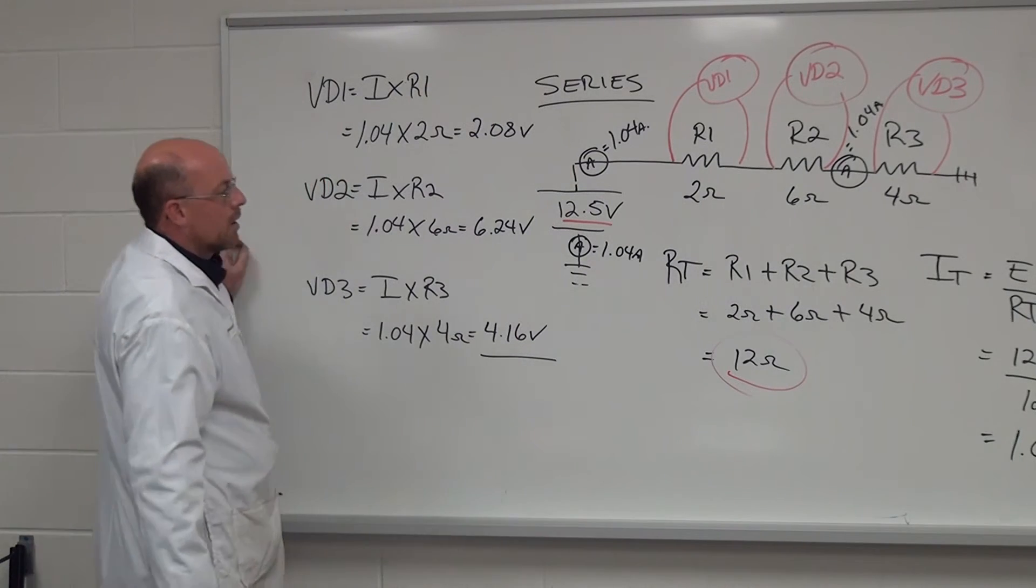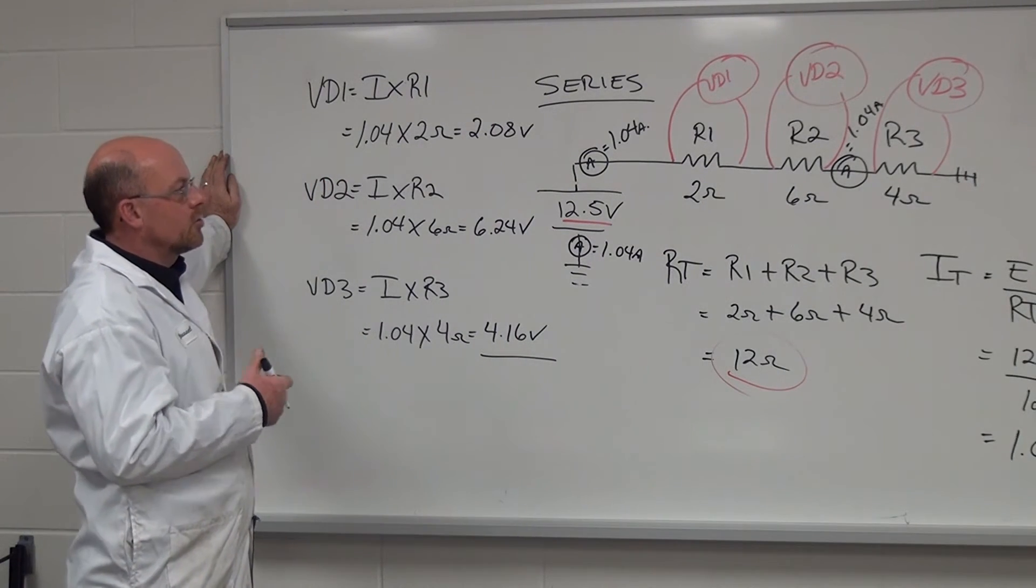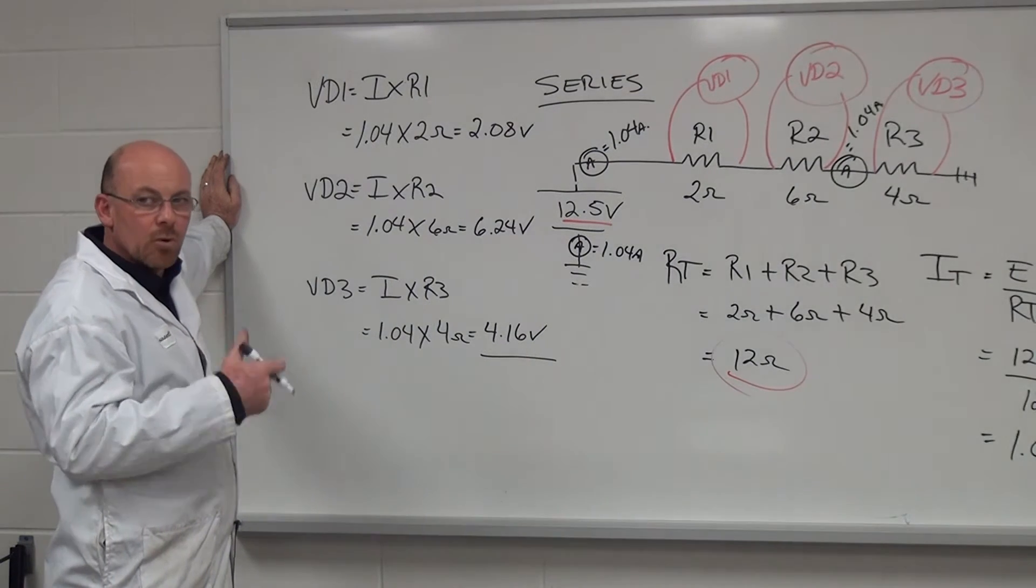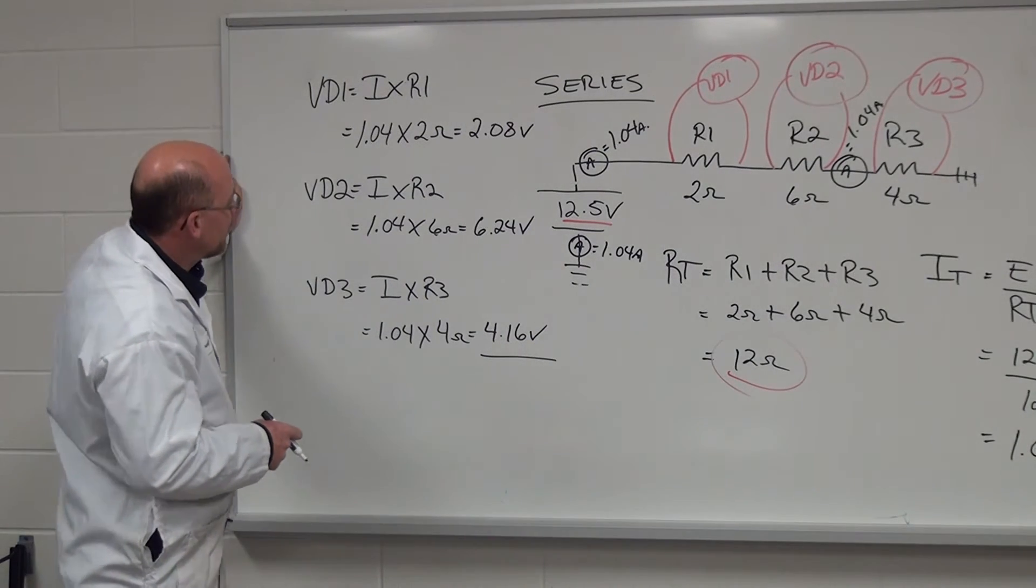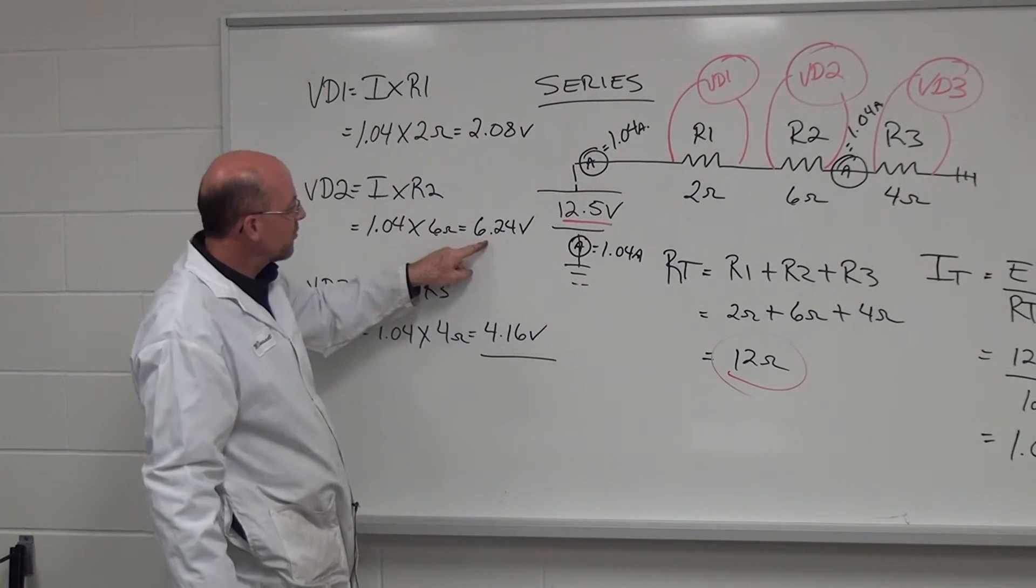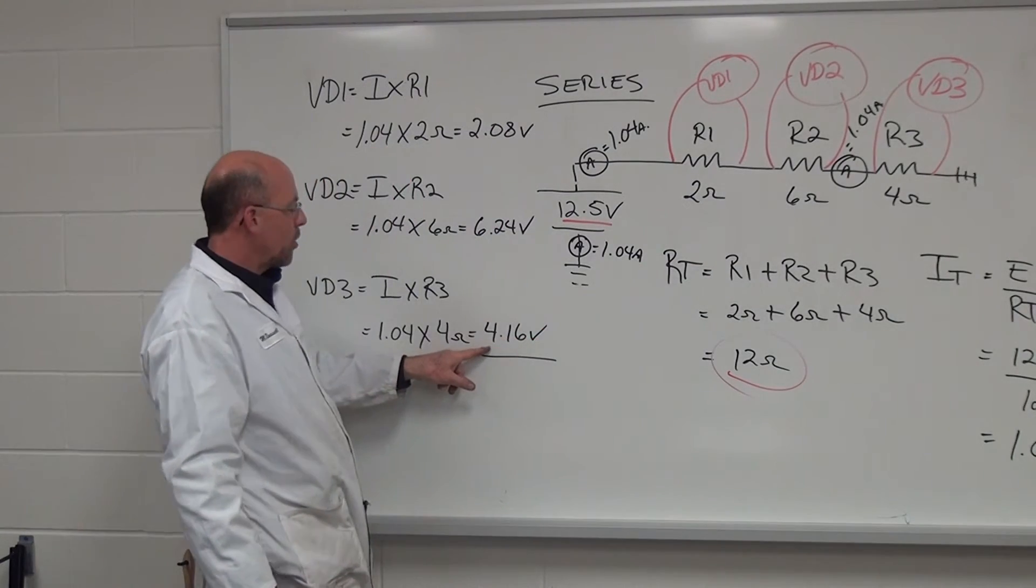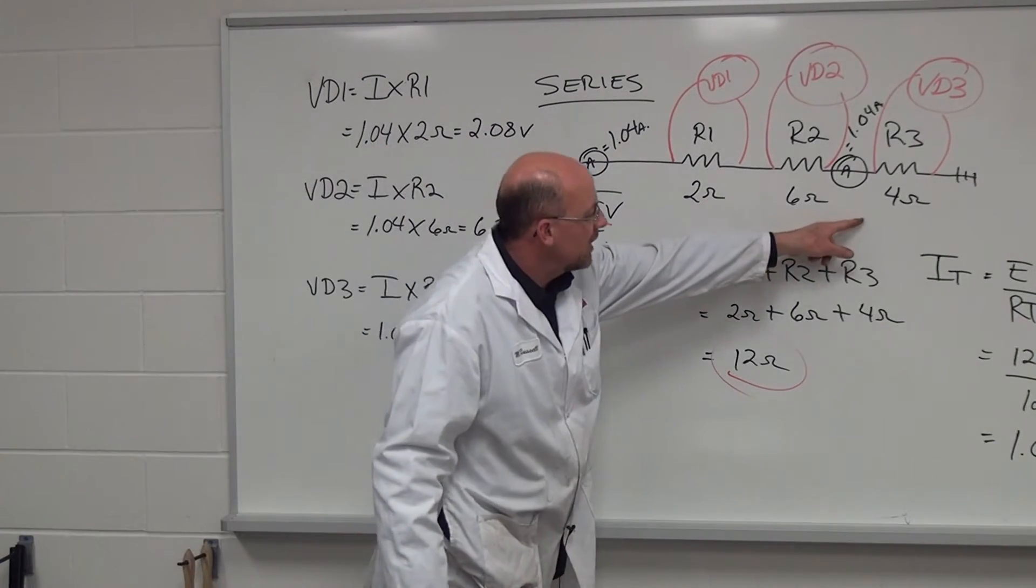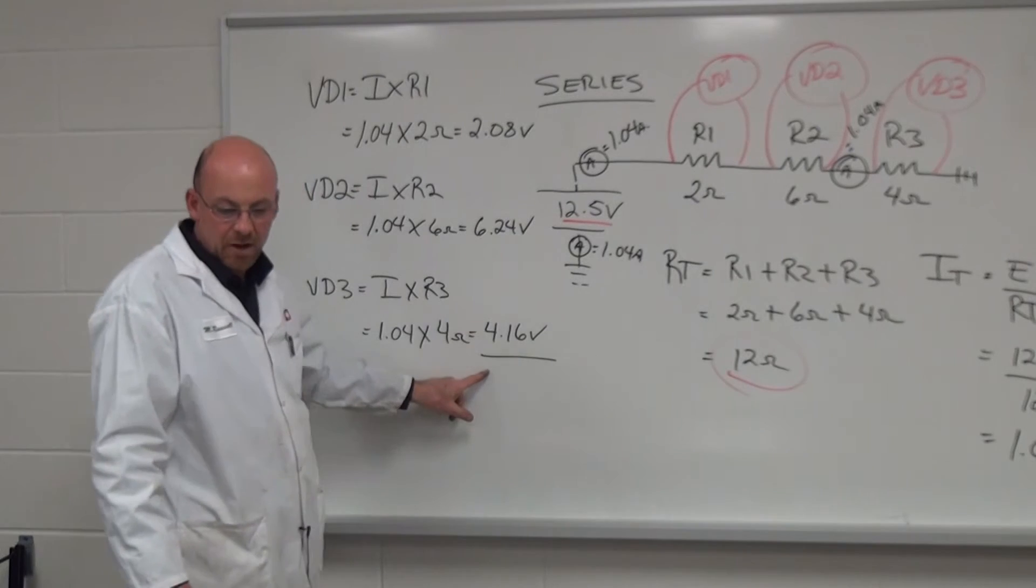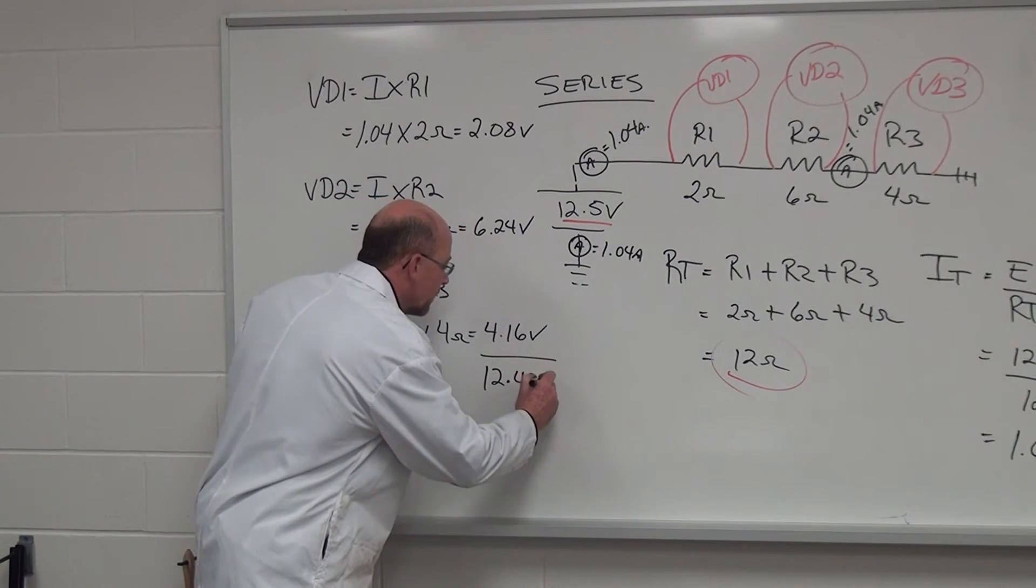So now, Kirchhoff's law states that the sum of all individual voltage drops will equal source voltage. So if we take a look at this and we add up 2.08 volts for VD1, 6.24 volts for VD2, and 4.16 volts for VD3, the total of this calculates out to 12.48 volts.